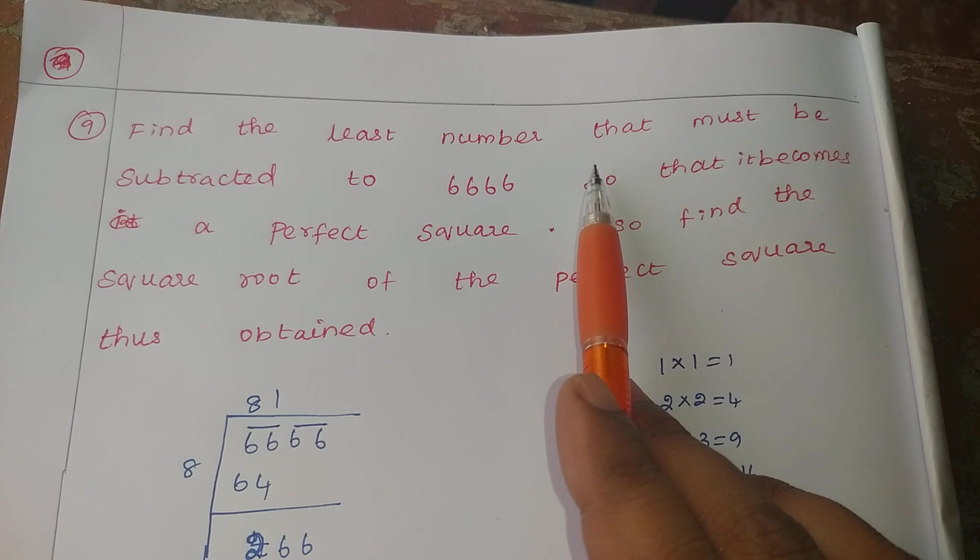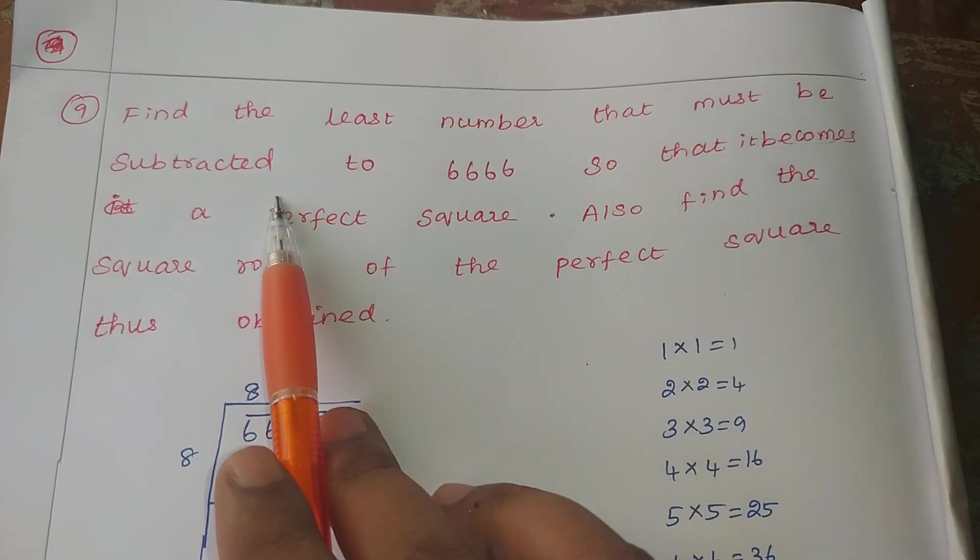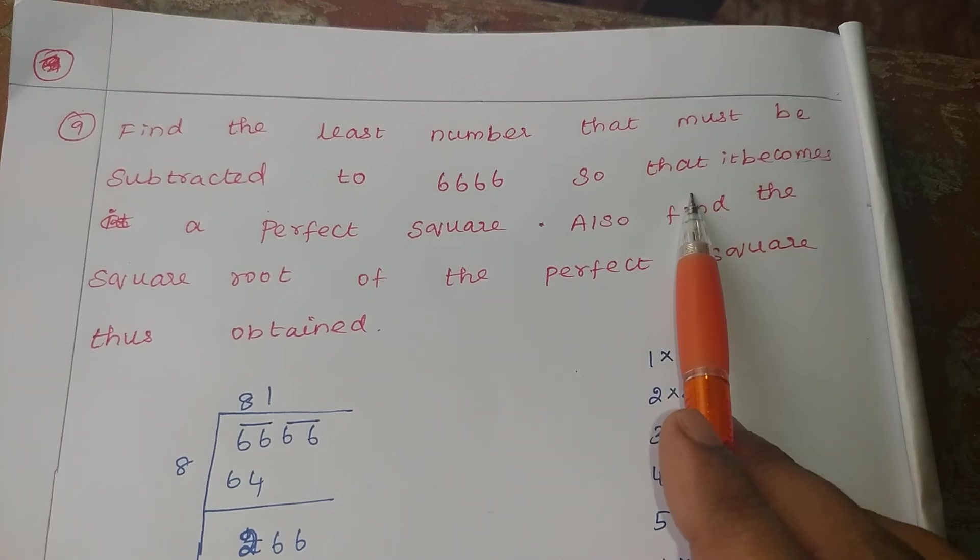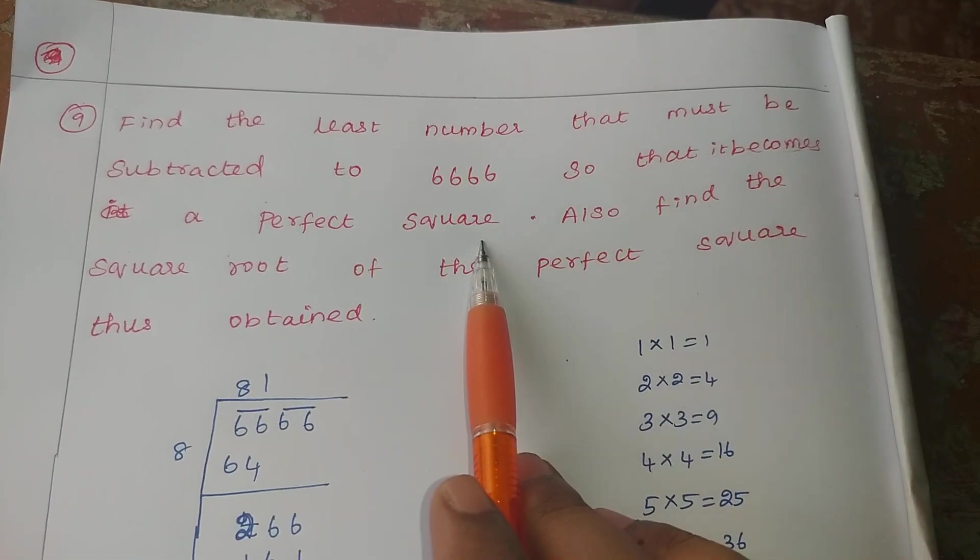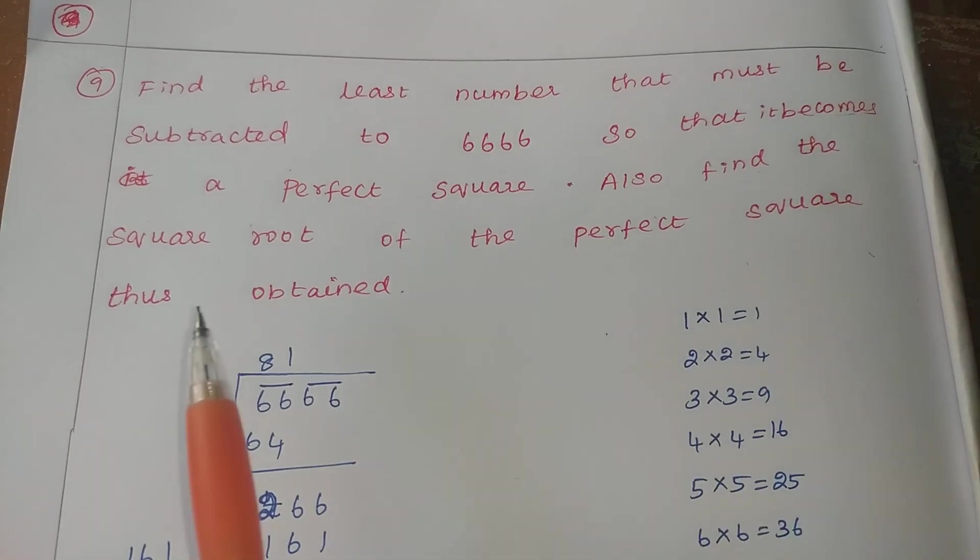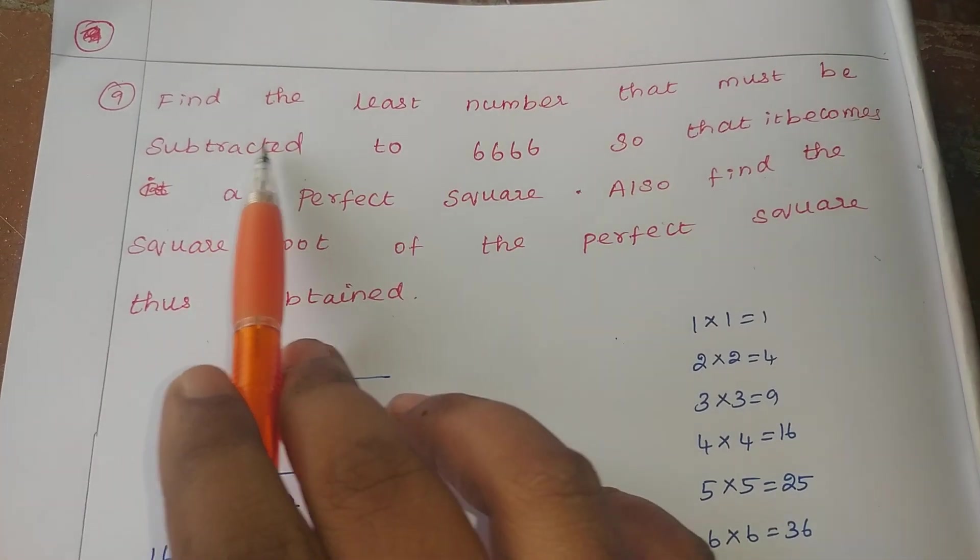Find the least number that must be subtracted to 6666 so that it becomes a perfect square. Also find the square root of the perfect square thus obtained.